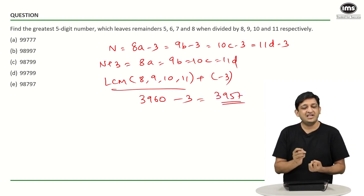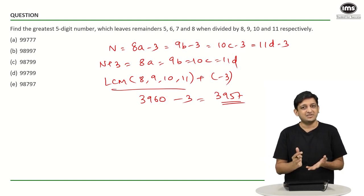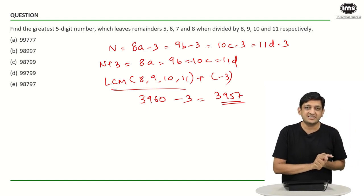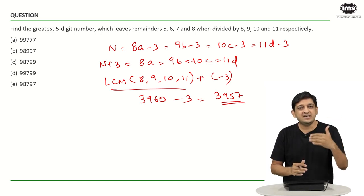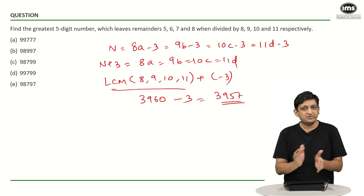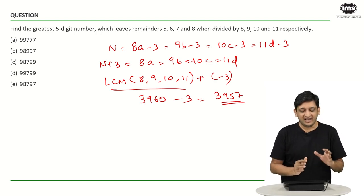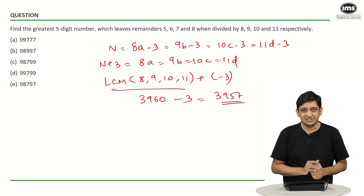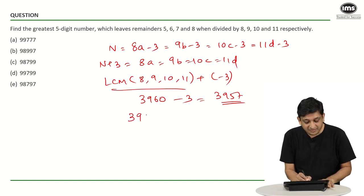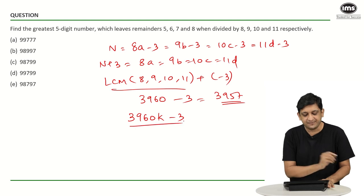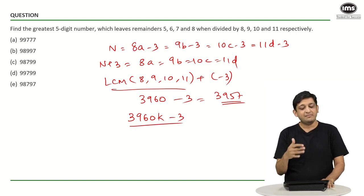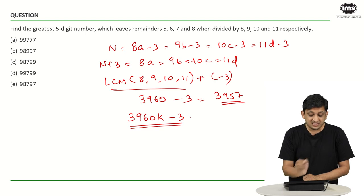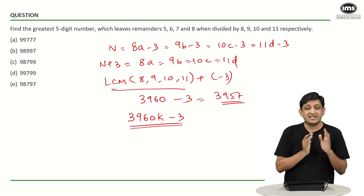Here is where things become slightly messier. We have 3960 minus 3 as the first number, but we need to find the greatest five-digit number. That is going to be slightly more involved along this path. The number has to be in the form of 3960k minus 3. Any number of that form will give the required remainders. We need to find all such five-digit numbers, i.e., numbers less than six digits long.